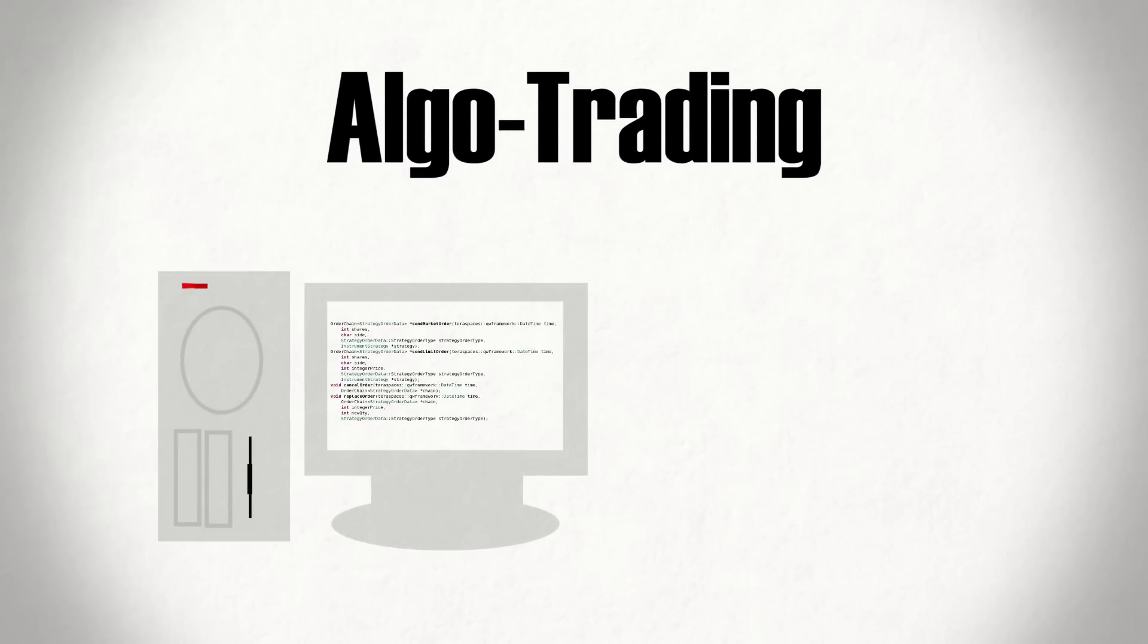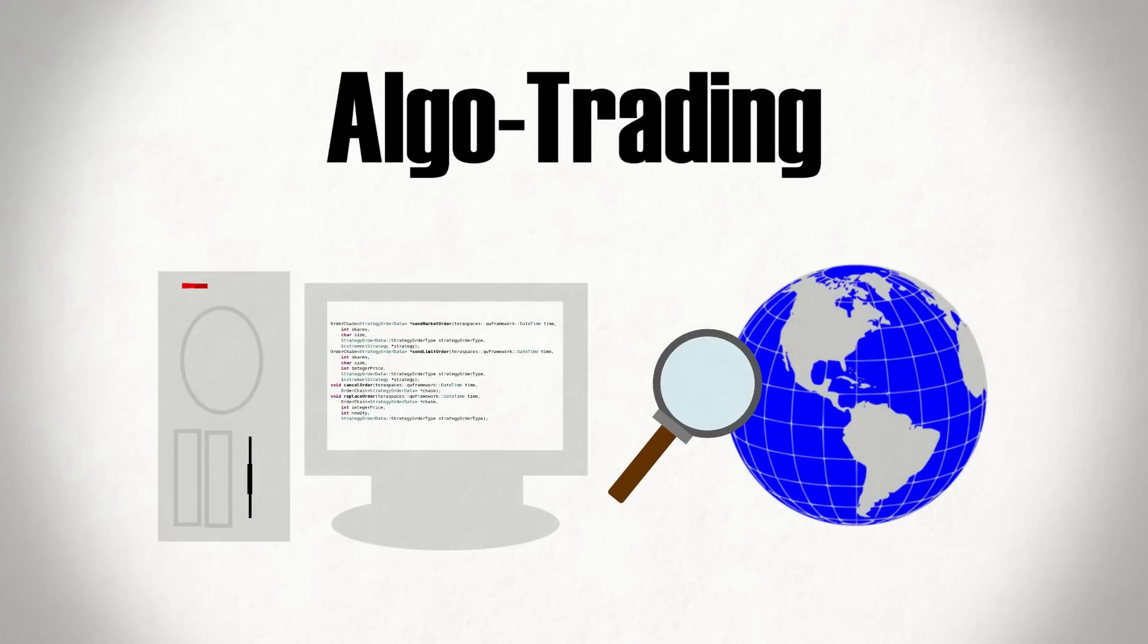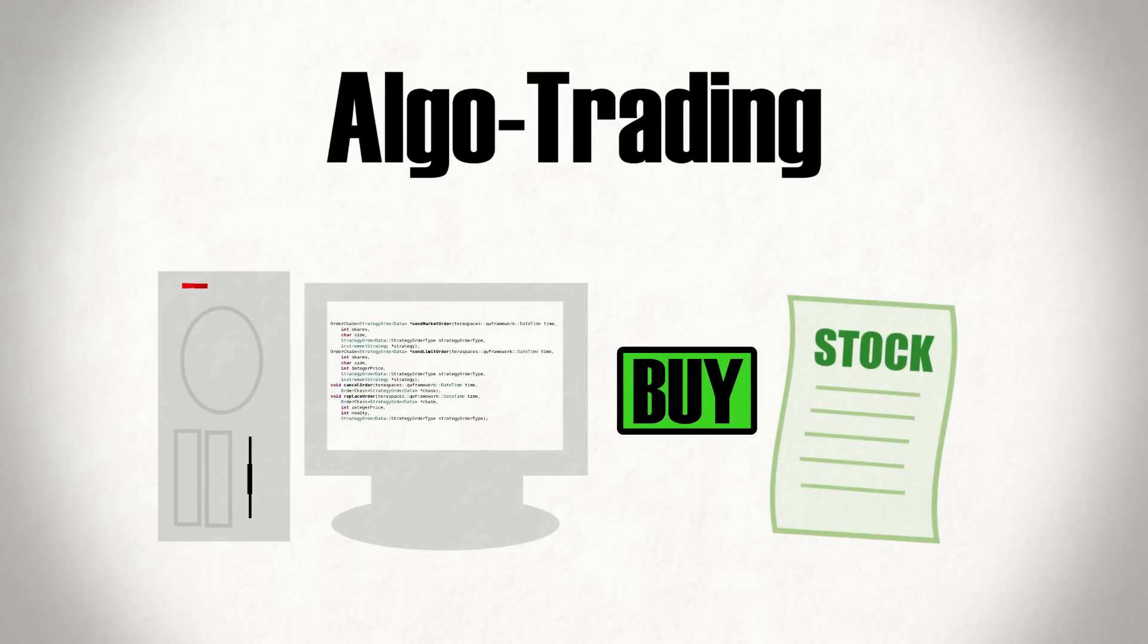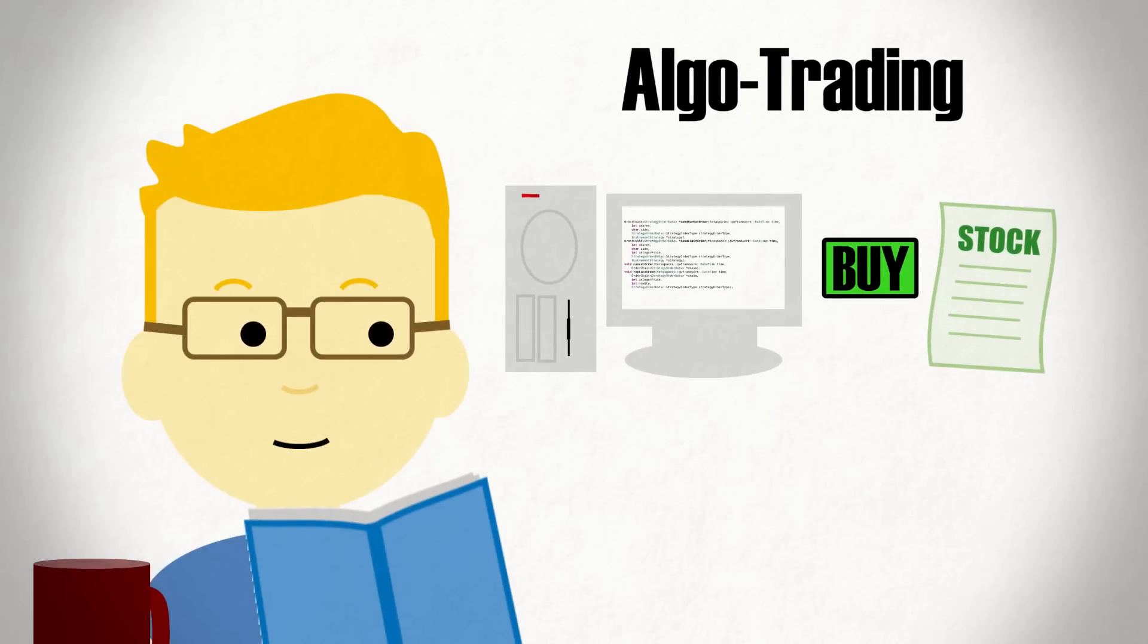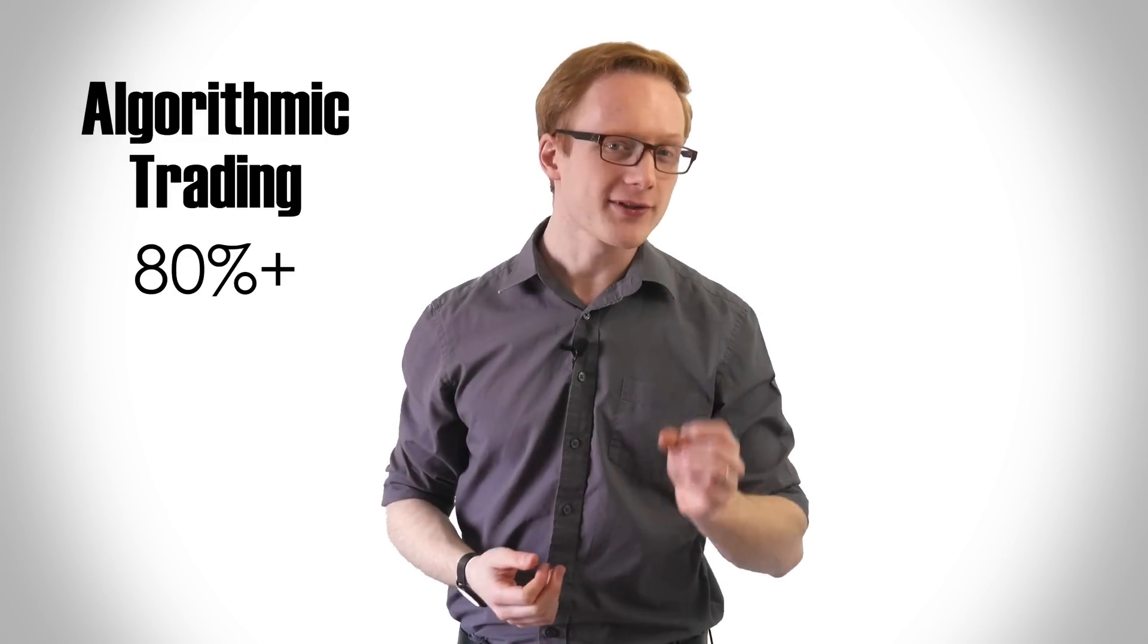Algo trading is the practice of using computers and algorithms to trade stocks, with programs analyzing multiple markets to identify attractive trade opportunities and executing transactions accordingly, often without any human interaction. Sounds like the plot of a dystopian sci-fi, right? But algo trading is already a popular practice in the field, with some estimates claiming that over 80% of market trading volumes come from machines. That's right, over 80% of stocks traded on exchanges are allegedly bought and sold by computers.